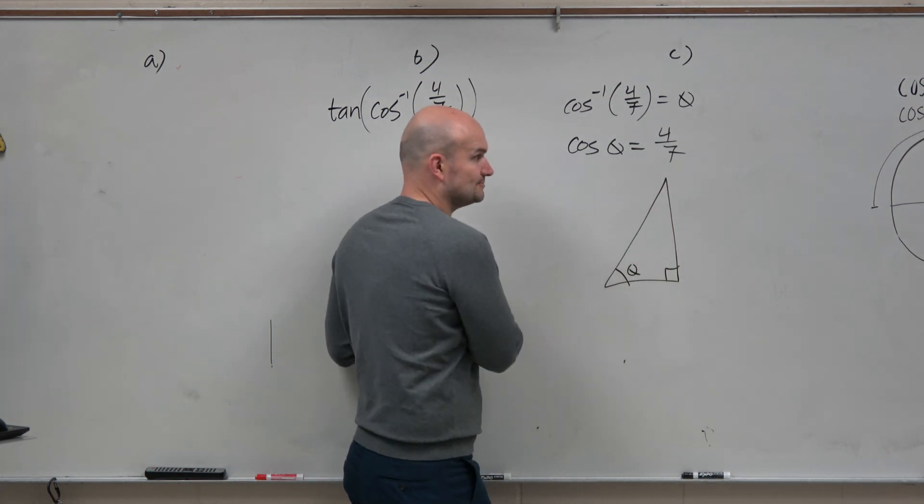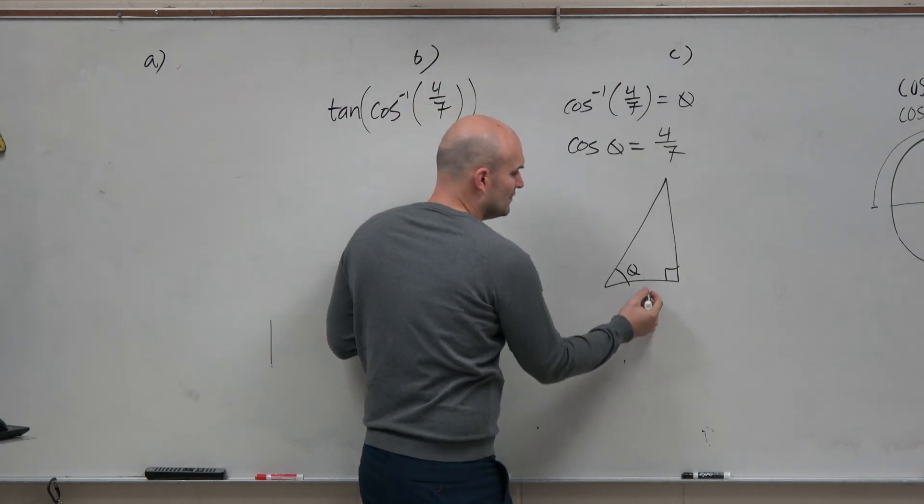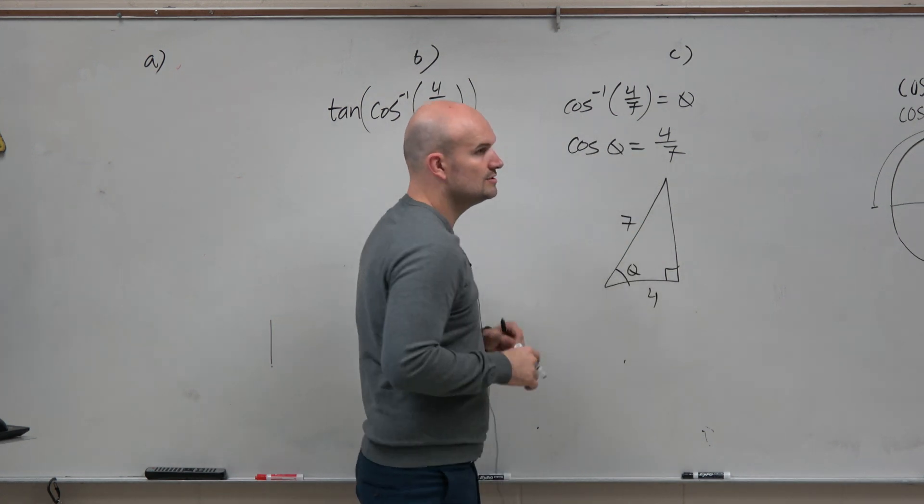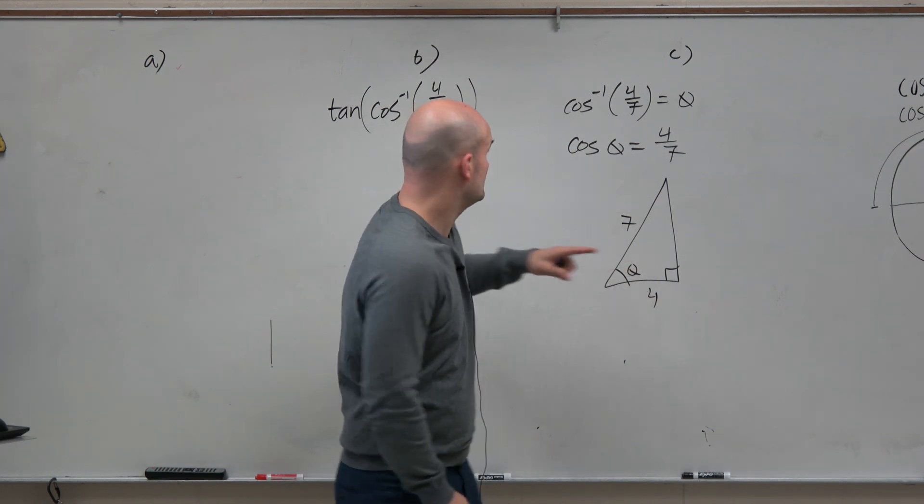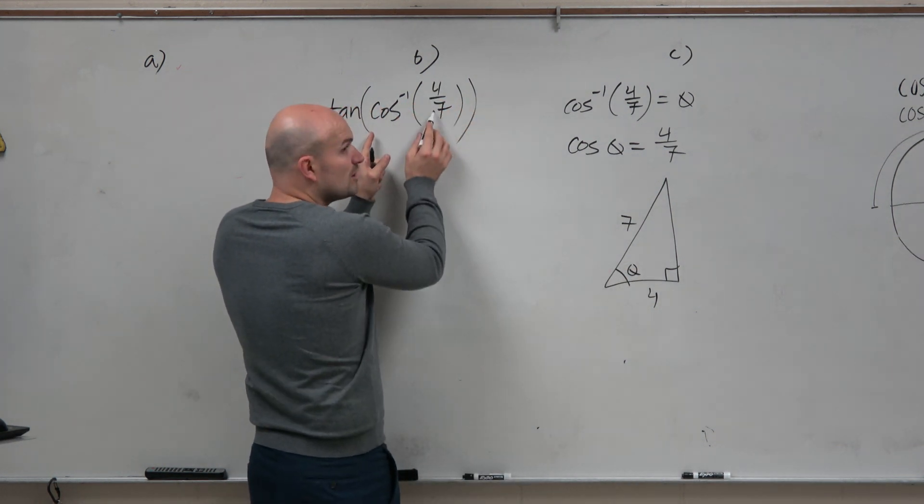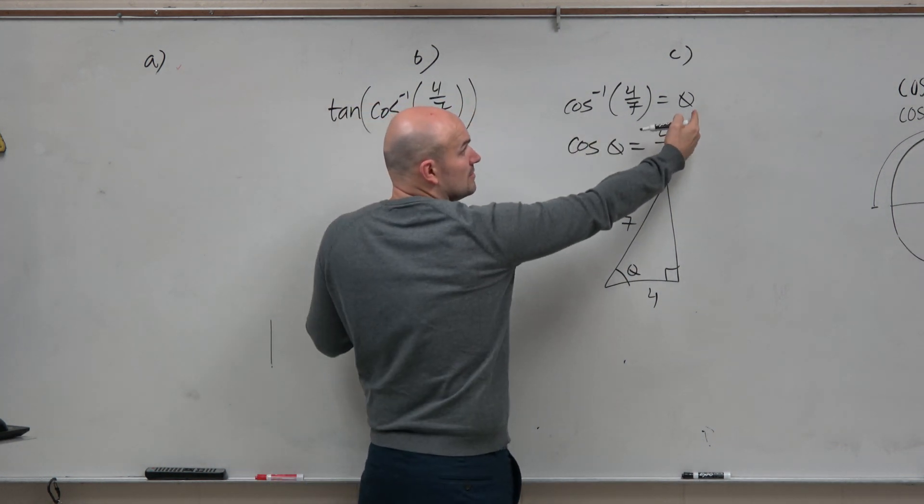I usually always draw mine like this. Well, now I have 4 over 7. So here's my triangle. So here's theta. So in reality, cosine inverse of 4 over 7, we said that's equal to theta.